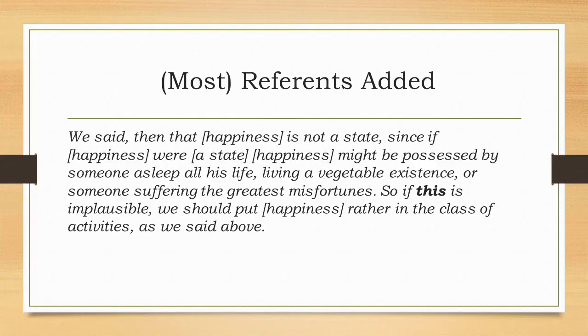Step one in our process is to replace all the pronouns in this argument with their reference, in order to make Aristotle's claims crystal clear. Doing so, we get this: 'We said, then, that happiness is not a state, since if happiness were a state, happiness might be possessed by someone asleep all his life, living a vegetable existence, or someone suffering the greatest misfortunes. So if this is implausible, we should put happiness rather in the class of activities, as we said above.'